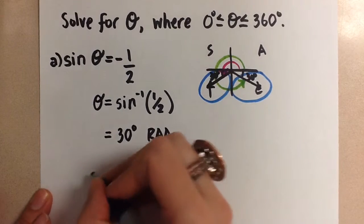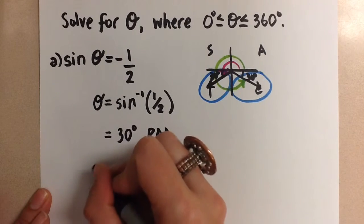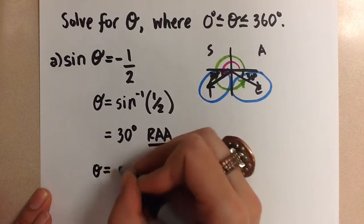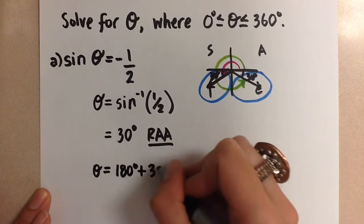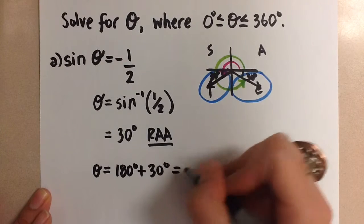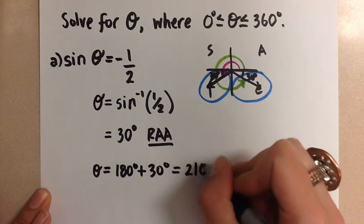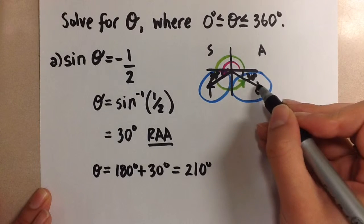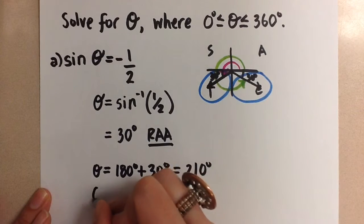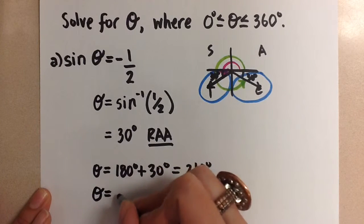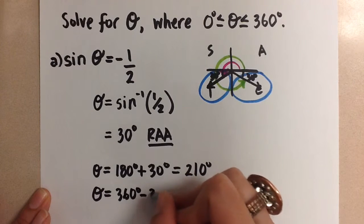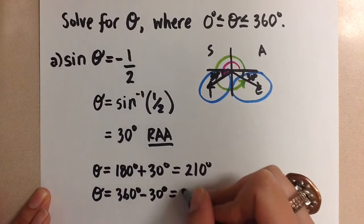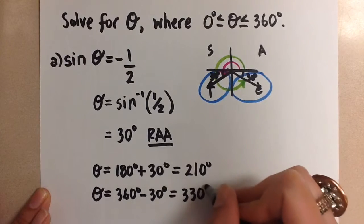So for the first one we will do theta equals 180 degrees plus 30 degrees and this is 210 degrees. And then for the angle in the fourth quadrant theta will be 360 degrees minus 30 degrees and we get 330 degrees.